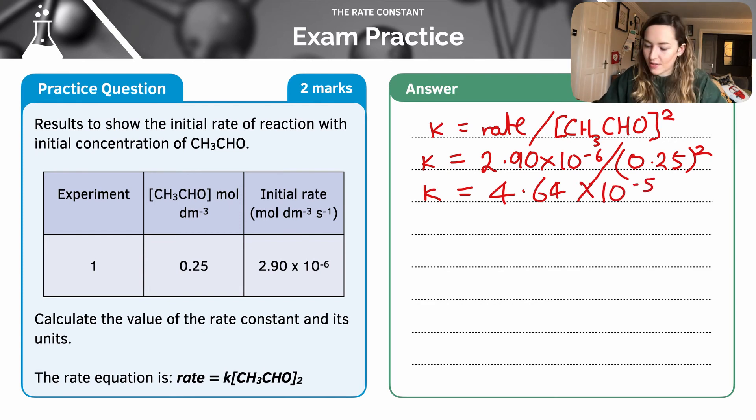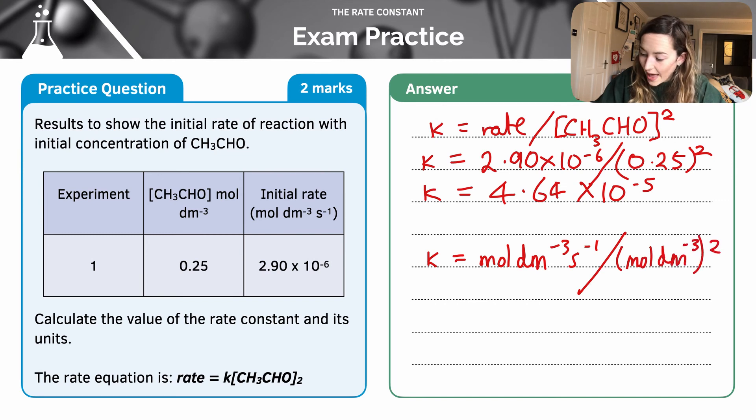we need to work out the units of k. So k is going to be equal to rate, of which my units are moles per decimetre cubed per second, divided by my concentration, which is going to be moles per decimetre cubed squared. So I can get rid of one of my moles per decimetre cubed, so effectively the square value, and I'm going to get rid of this one, because they cancel out.